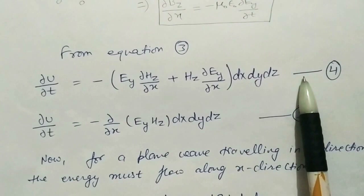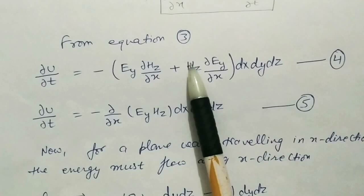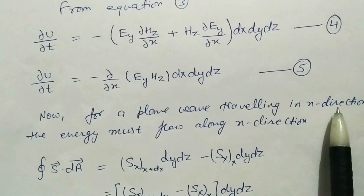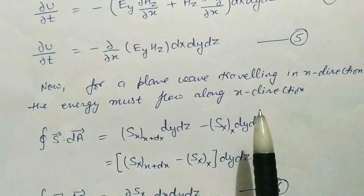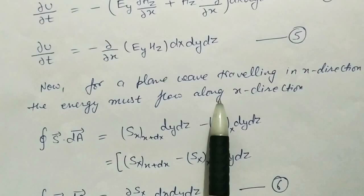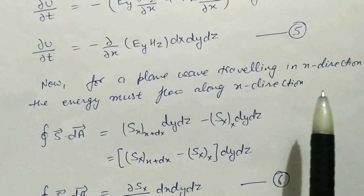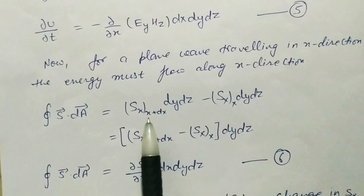Now, the time derivative has been replaced by the space derivative, so we have the equation for the rate of change of energy. Writing this equation in a new form and differentiating again gives us the same equation. Now for a plane wave traveling in the x-direction, energy must flow in the x-direction. If the medium is homogeneous, the electromagnetic wave propagates in that direction and energy propagates in the same direction. So S·dA represents the value of S at x plus dx times dy·dz.